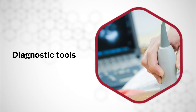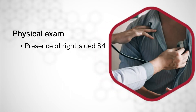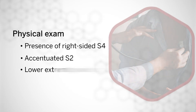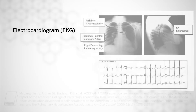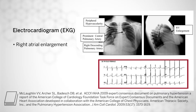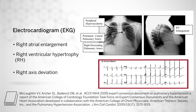In addition to symptoms, there are other diagnostic tools that can be helpful in diagnosing pulmonary hypertension. On physical exam, there could be evidence of an S4 indicating high right ventricular pressure or hypertrophy, or an increased S2, which would be suggestive of high pulmonary pressures forcing close the pulmonic valve. You may also see lower extremity swelling. On EKG, you may see right atrial enlargement, evidence of right ventricular hypertrophy, right axis deviation, or right bundle branch block.